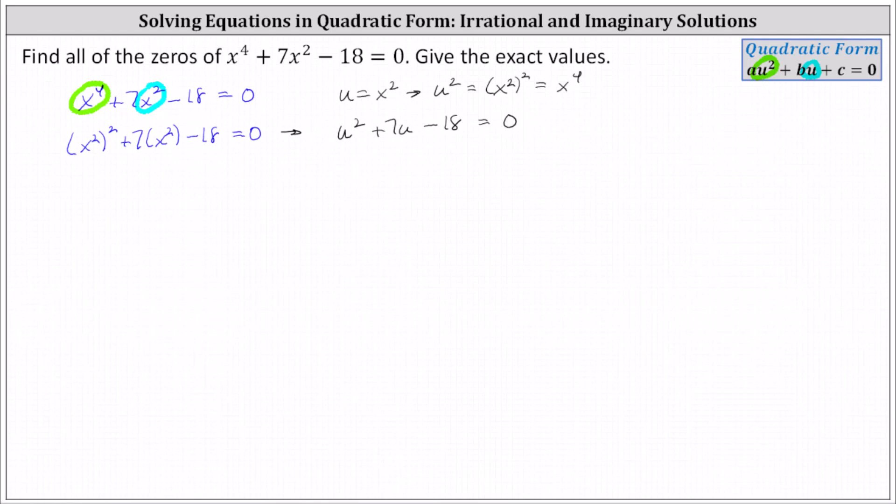We know how to solve this type of equation. Let's see if it's factorable. If it does factor, it will factor into two binomial factors, where because the first term is u squared, we have a factor of u in the first positions. The terms in the second positions are the factors of negative 18 that add to seven.